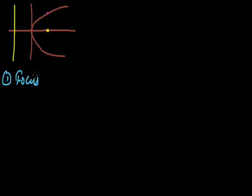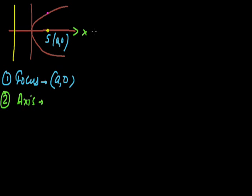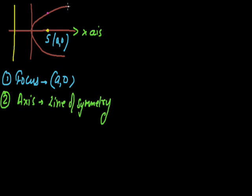Now let's understand each term of the standard parabola one by one. First term is focus: the focus is at (a, 0) and is represented by S. The next term is the axis of the parabola — here the x-axis is the axis; it is a line which passes through the vertex and is perpendicular to the tangent at the vertex. The axis is also a line of symmetry — it cuts the parabola into two halves, each being the mirror image of the other.